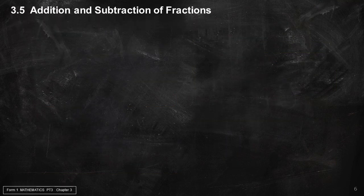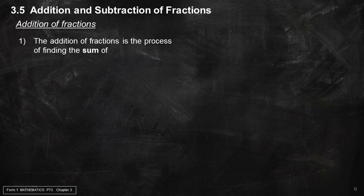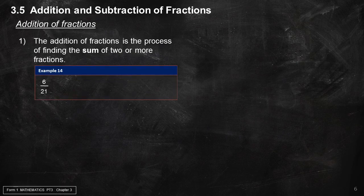Section 3.5: Addition and Subtraction of Fractions. Addition of fractions is the process of finding the sum of 2 or more fractions. Example 14: 6 over 21 plus 11 over 21 equals (6 plus 11) over 21, which equals 17 over 21.